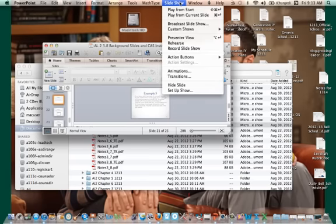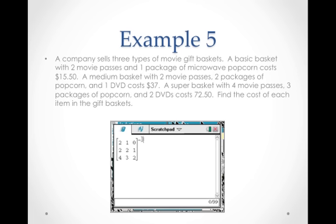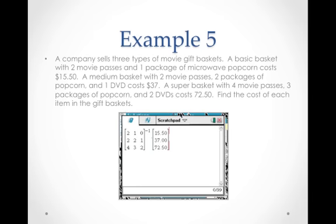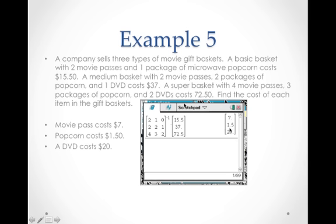Let's go look at how to do that with our calculator. Remember, you want to take your coefficient matrix and find the inverse. We're going to do 2, 1, 0, 2, 2, 1, 4, 3, 2, and then that's with a superscript of negative 1. We want the inverse of it. Then we're going to put in our matrix B, because we want A inverse times B. So we go back to the little matrix thing and we tell it we want three rows in just one column and we put that in. So we've got A inverse times B. We press enter and we get 7, 1.5, and 20. That tells me the first entry in my answer goes with M, the second entry goes with P, and the third entry goes with D. So that tells me that a movie pass costs $7, a popcorn costs $1.50, and a DVD costs $20.